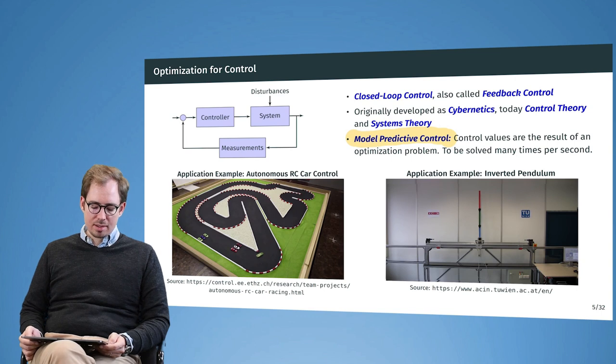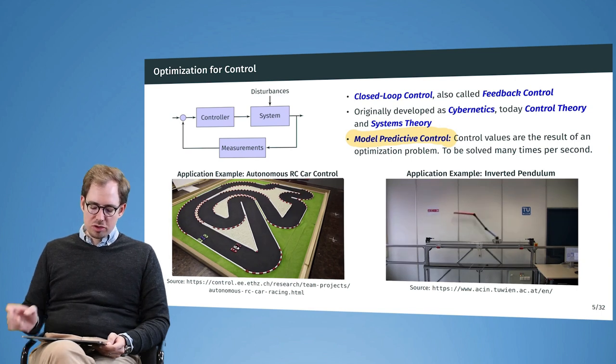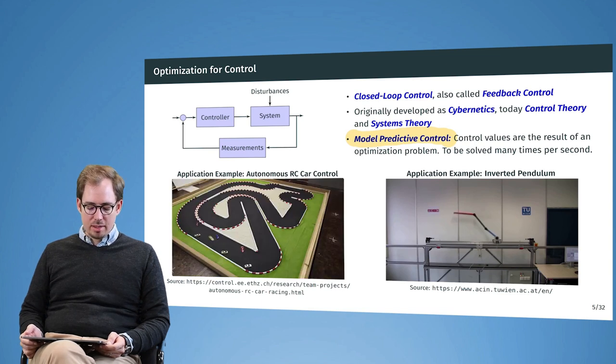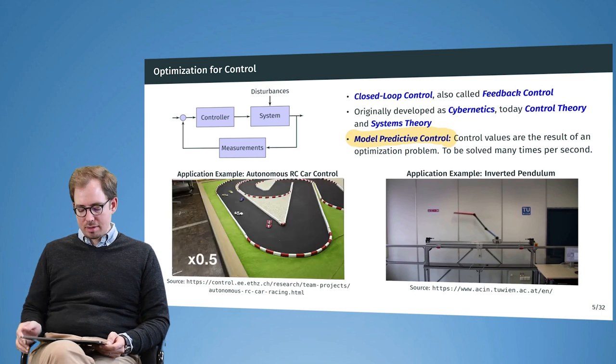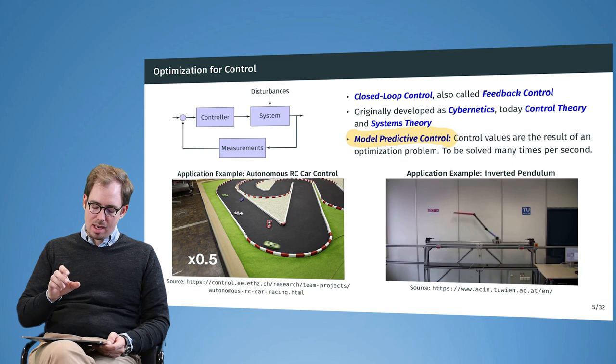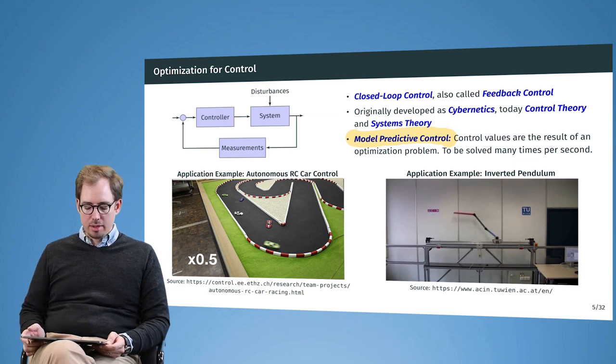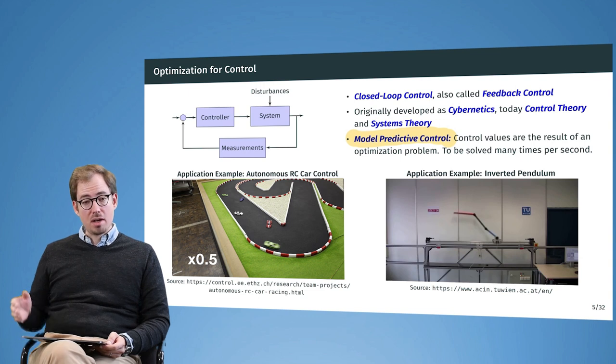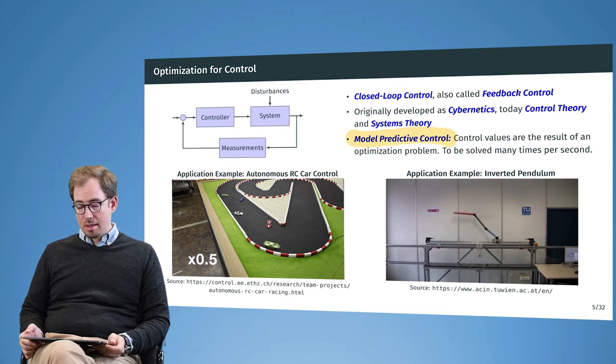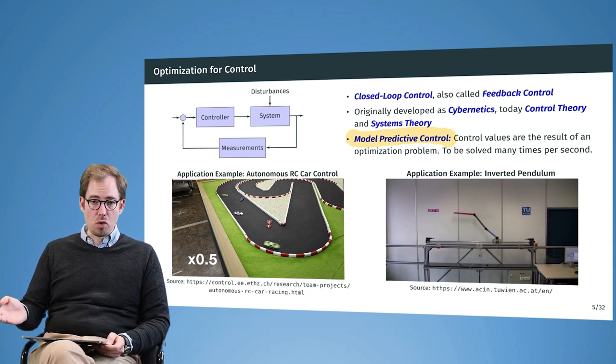We have a model that we can use to predict the future, and then we can optimize our actions in this model simulation and apply it back into the real world. Another example here on the left side is the autonomous control of a small radio control vehicle. As you see, the car is really drifting around the corners and is always driving on the perfect line. This is possible because he is planning ahead and knows when the curve is coming, doing a constant optimization knowing the current state of the car itself and of its environment. These are all optimization problems.